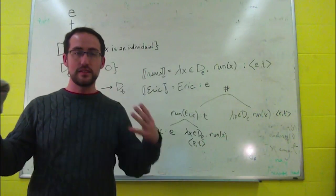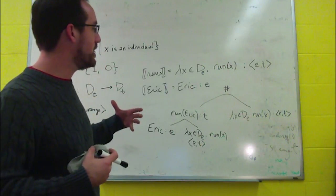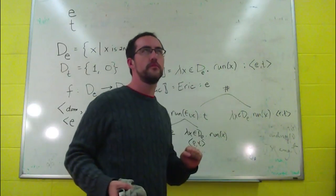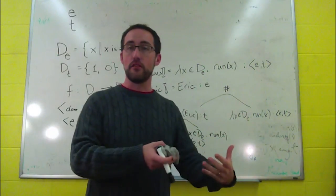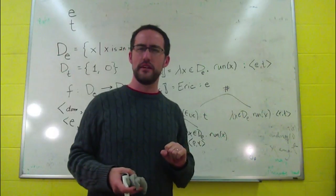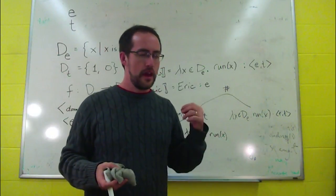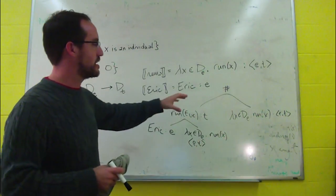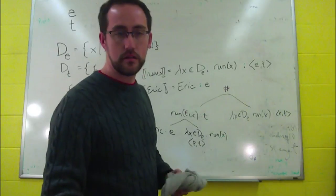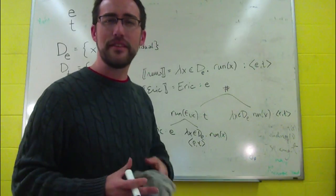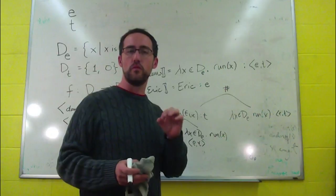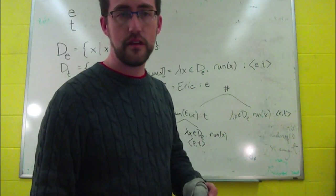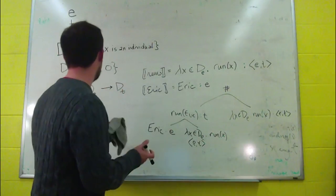So essentially, we can use these semantic types to categorize functions, to categorize entities and truth values and other objects that we'll see. And in doing so, we can help limit the kinds of compositions that we get, and we can make predictions about the types of objects that we'll want. And that's going to be a really useful kind of thing. So, what about a transitive verb?